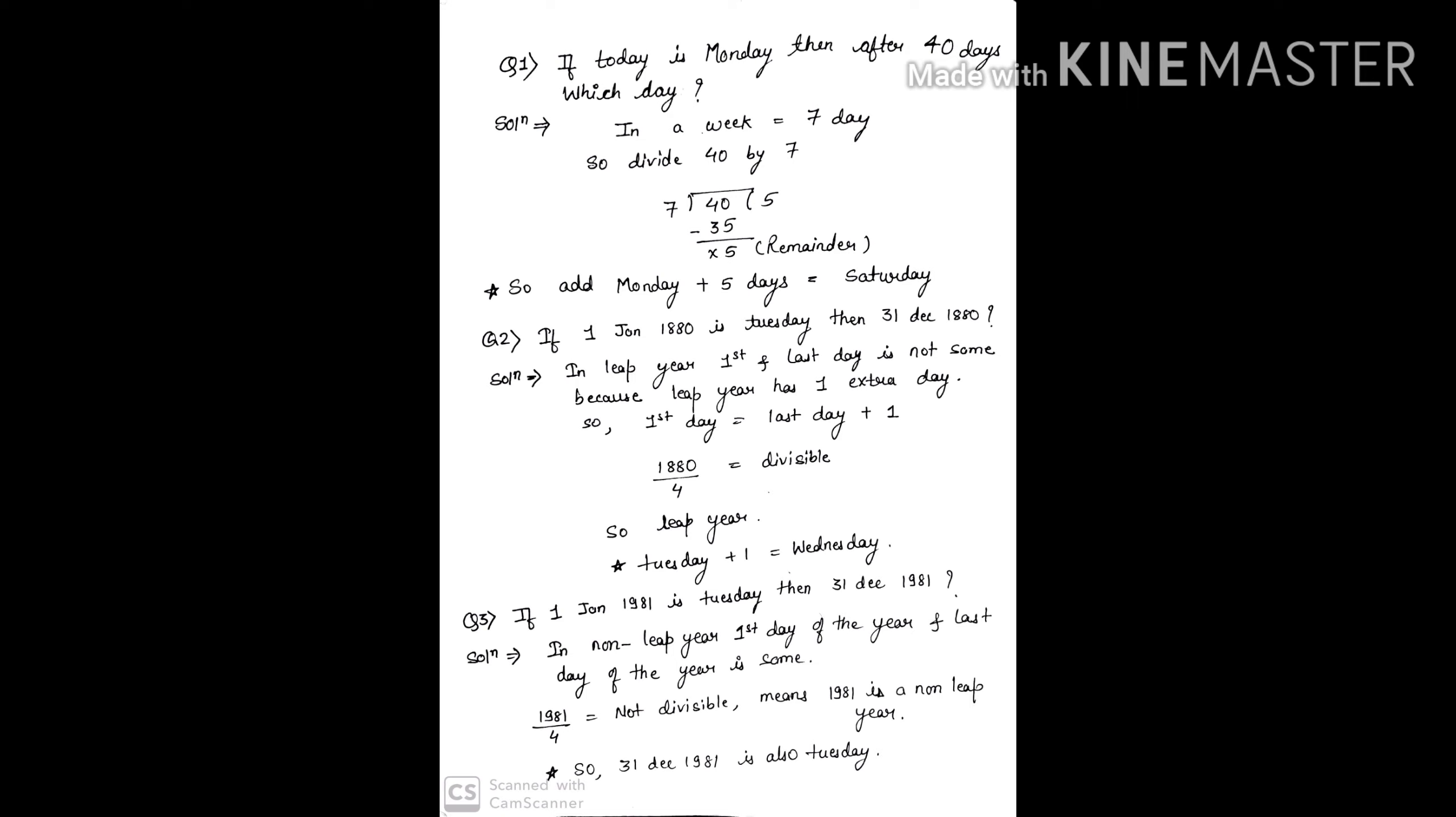7 fives are 35, it means 40 minus 35 will give you 5 as remainder. So now add 5 days with Monday that is given in the question, so we will have Saturday as our answer.